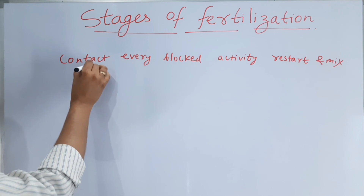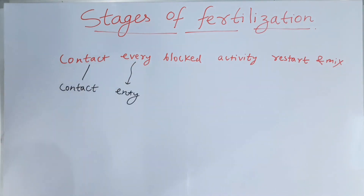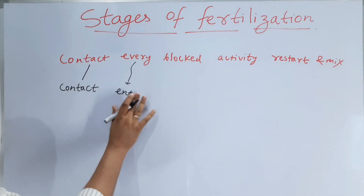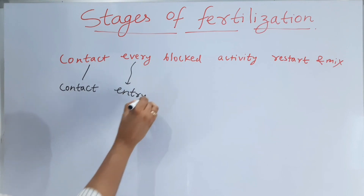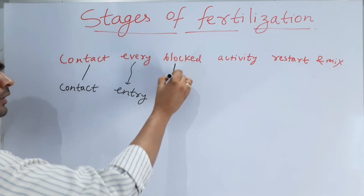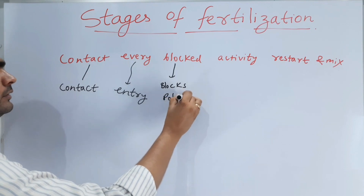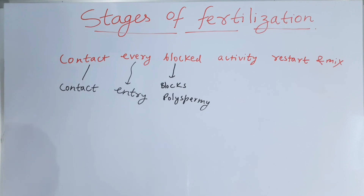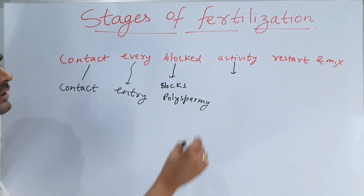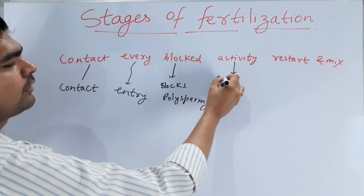The first word 'contact' means contact — first they will contact, then there will be the entry of sperm, so we call it entry. Then polyspermy will be blocked — blocks polyspermy — meaning more than one sperm will not enter into the ova. Another one is activation of cell, where the cell activates and gets ready for zygote formation.